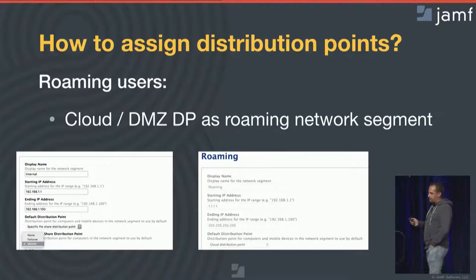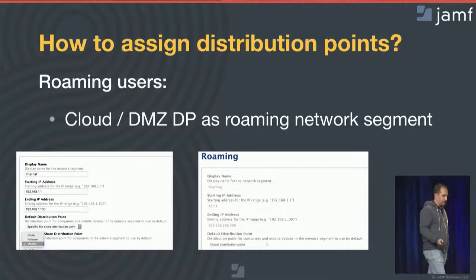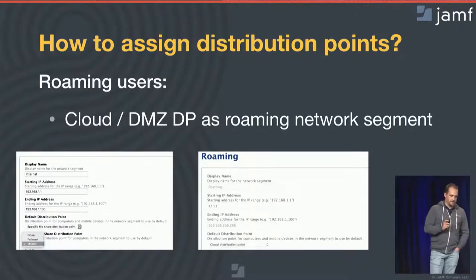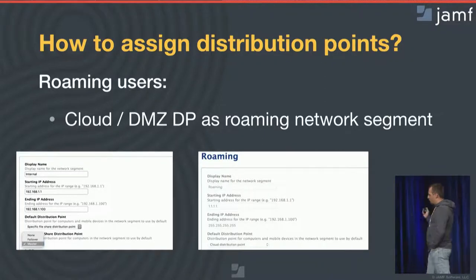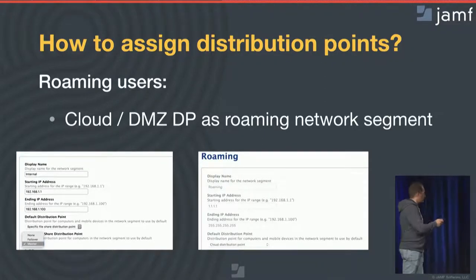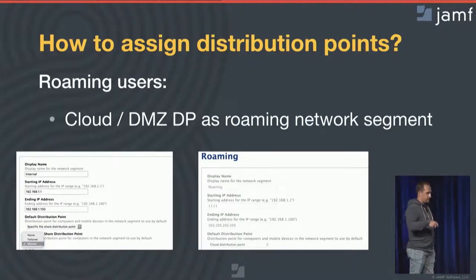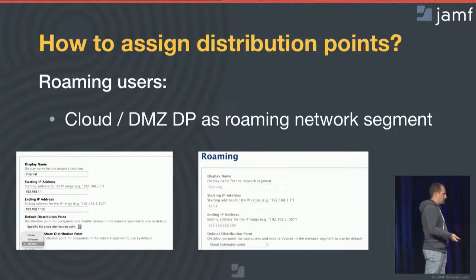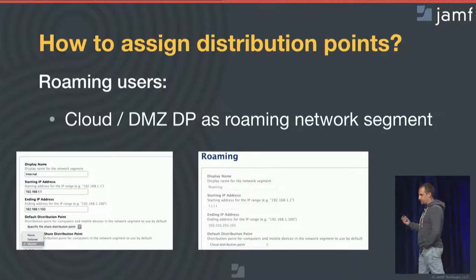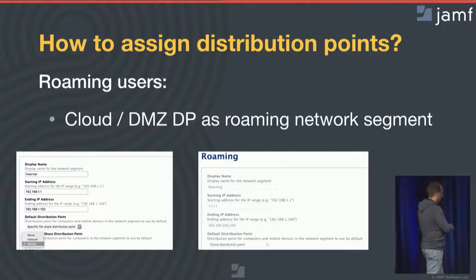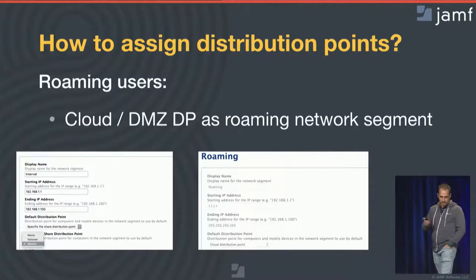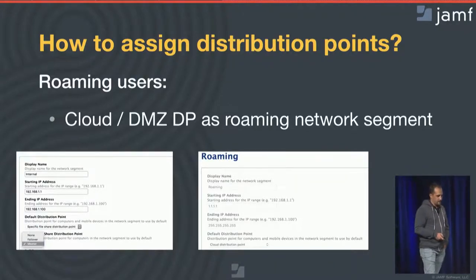If a Mac is a member of two network segments with an equal number of IP addresses, Jamf Pro will take the network segment where the starting IP address starts with the lowest number. So if I have two IP ranges with 10 IP addresses each — one starting with 172 and the other with 192 — it will take the 172 network segment and point the Mac to that specific distribution point. Just highlighting this because there has been some confusion about it on Jamf Nation.